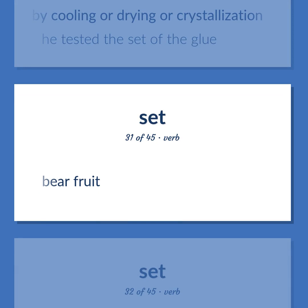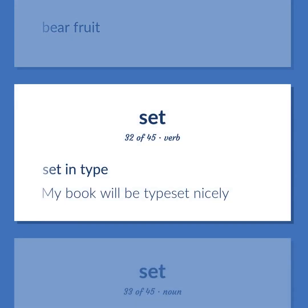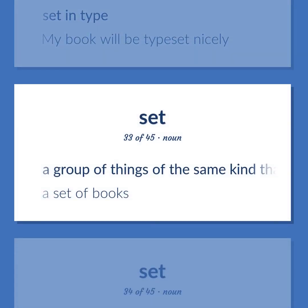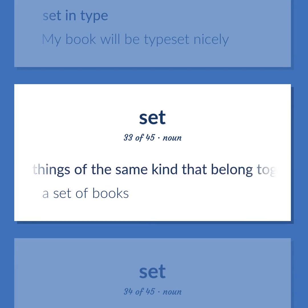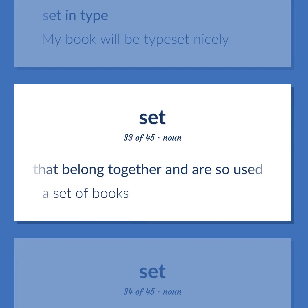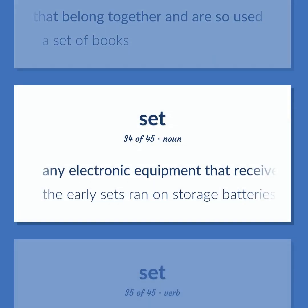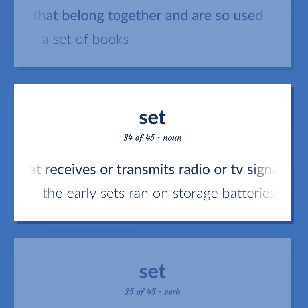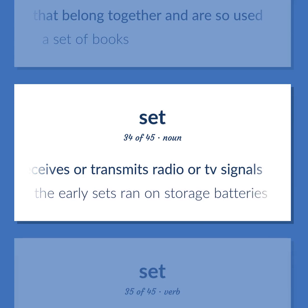Set: Bear fruit. Set in type. Example: My book will be typeset nicely. A group of things of the same kind that belong together and are so used. Example: A set of books. Any electronic equipment that receives or transmits radio or TV signals. Example: The early sets ran on storage batteries.